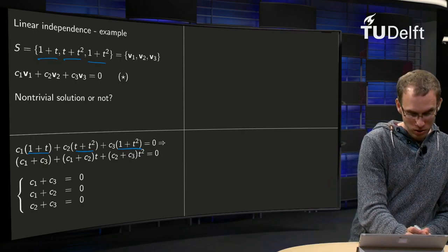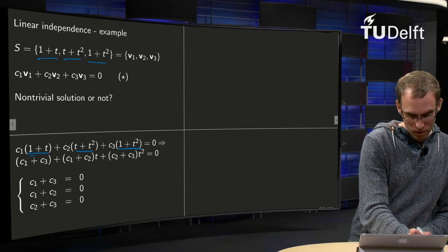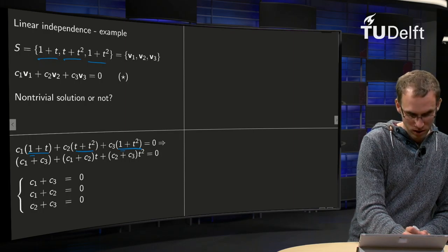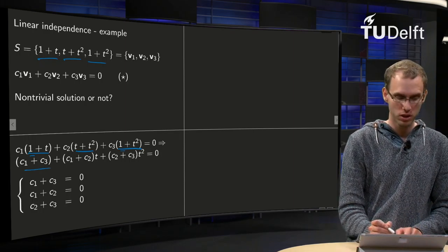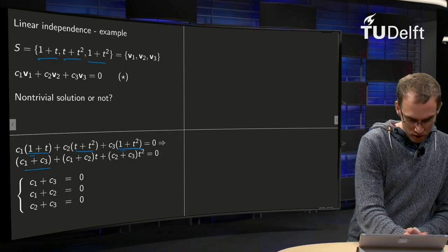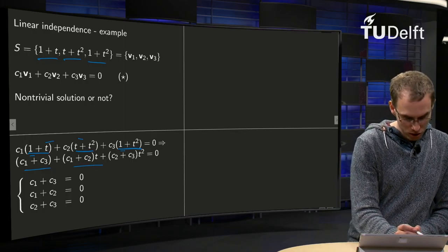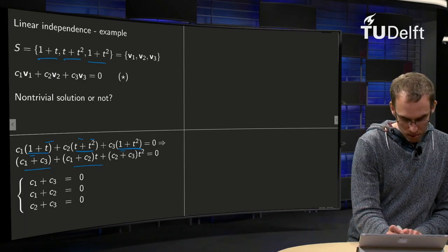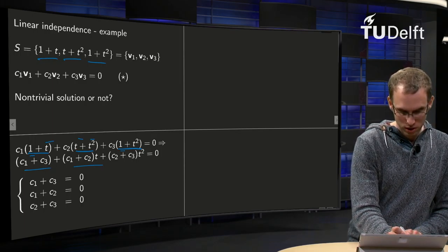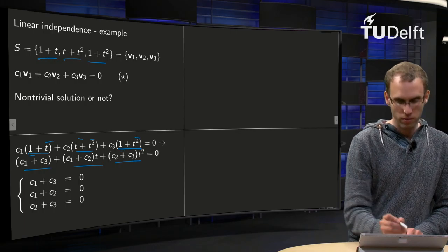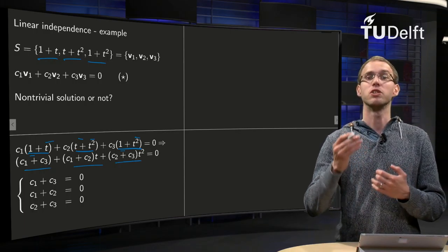And then we rearrange. We take the constants, so c1 from the 1 plus c3, so we get c1 plus c3 the constant. Then we have t terms with the c1 and c2, so c1 plus c2 times t. And we look for the t squared terms: c2 times t squared plus c3 times t squared. So here we have the t squared terms, equals zero still.